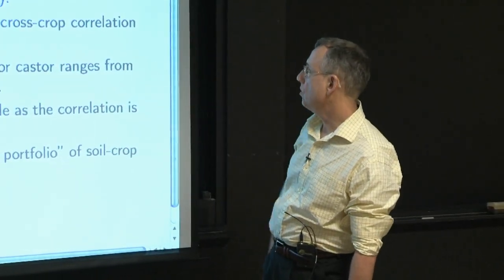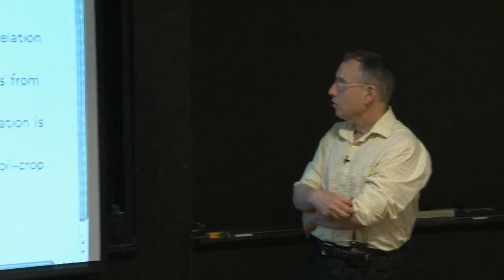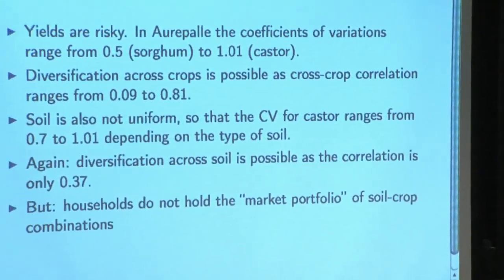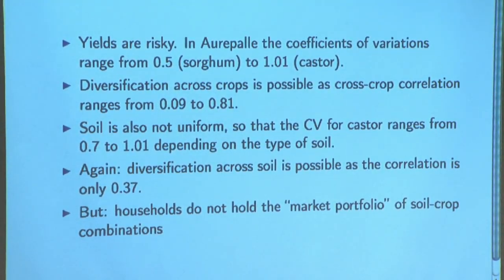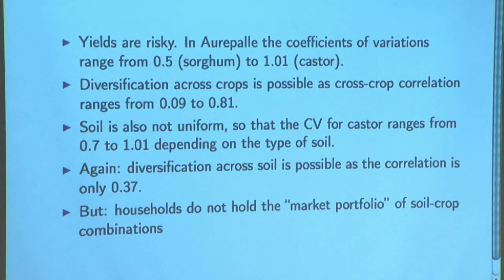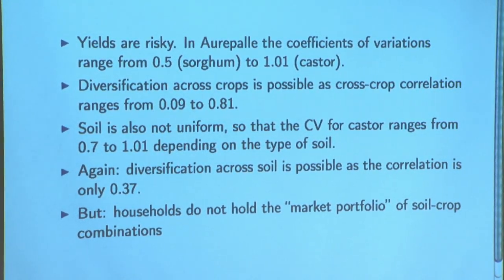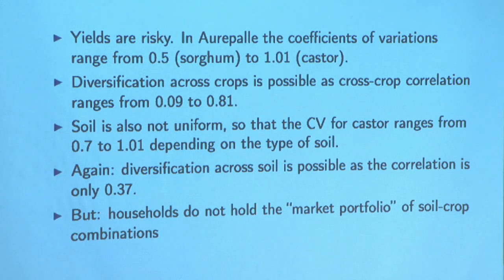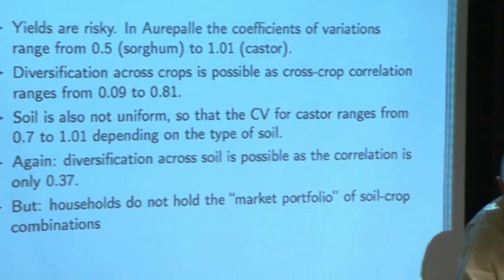You could diversify across these crops — that helps. Depending on the pair of crops you pick, the cross-crop correlations could be as low as 0.09 or much higher. A low number is a good thing because you can spread your risk. Soil isn't uniform either. The cross-soil correlation for a given crop is 0.37 and relatively low. Nevertheless, it's not true that all households hold a diversified basket of all these things.